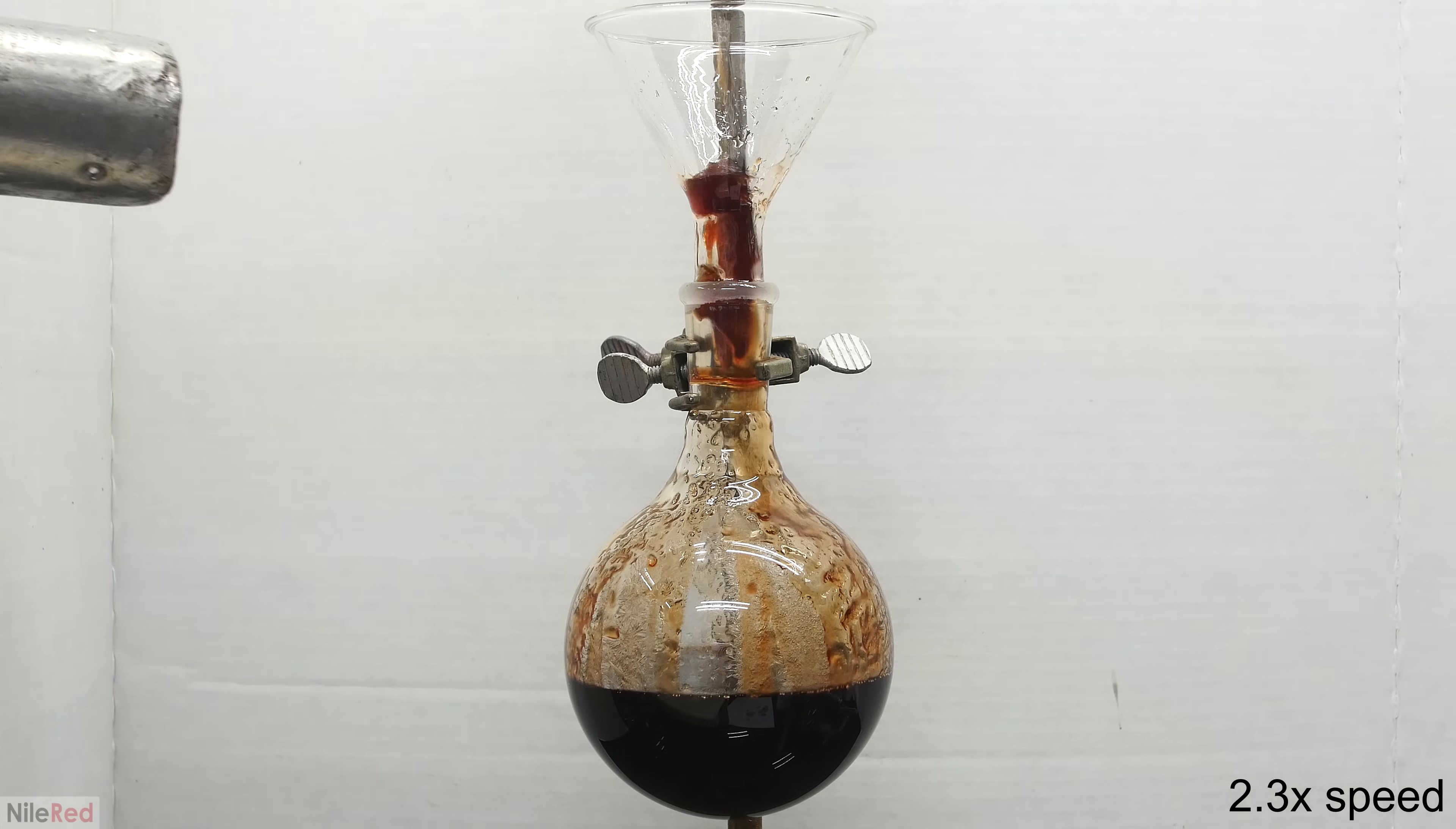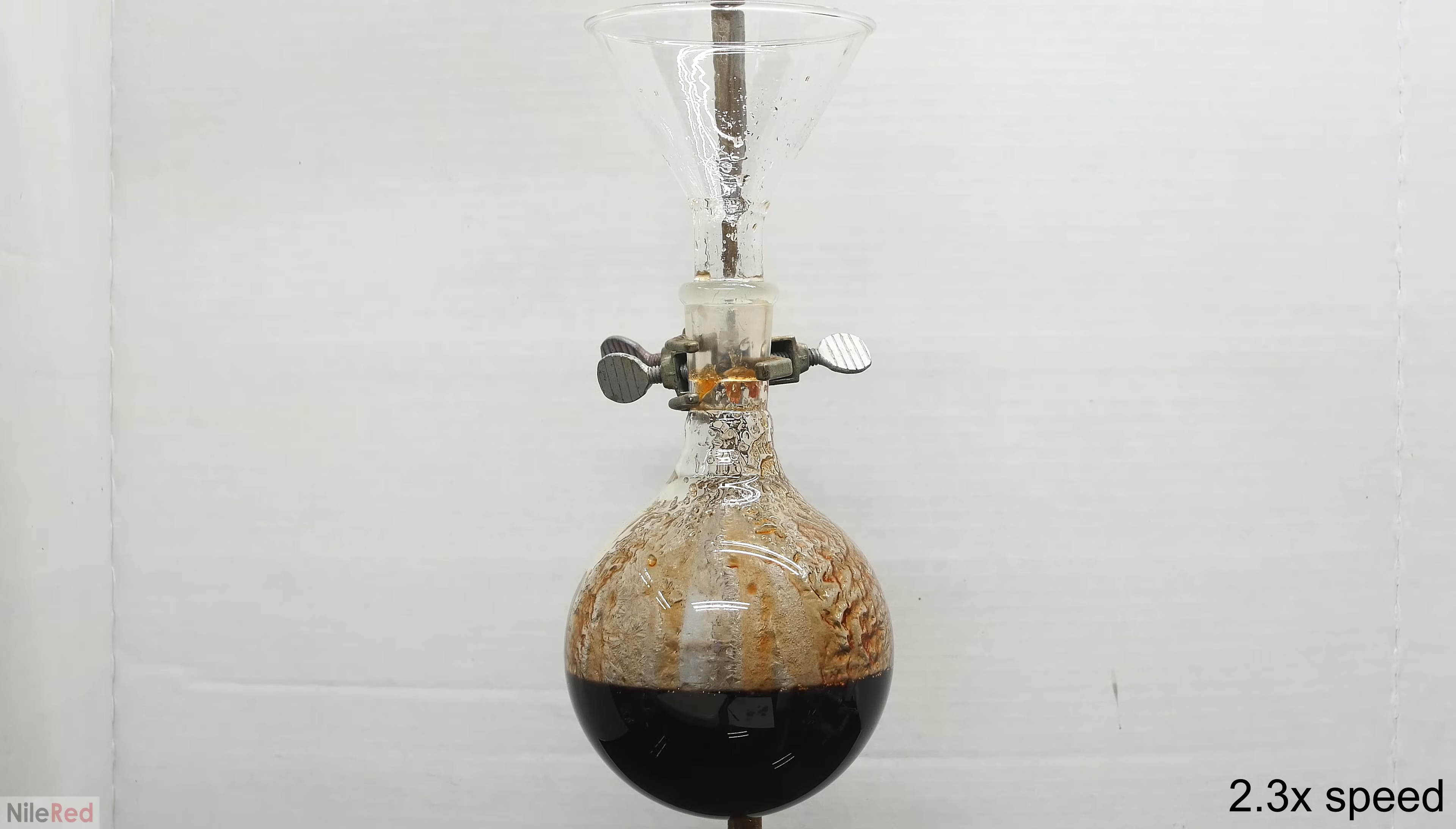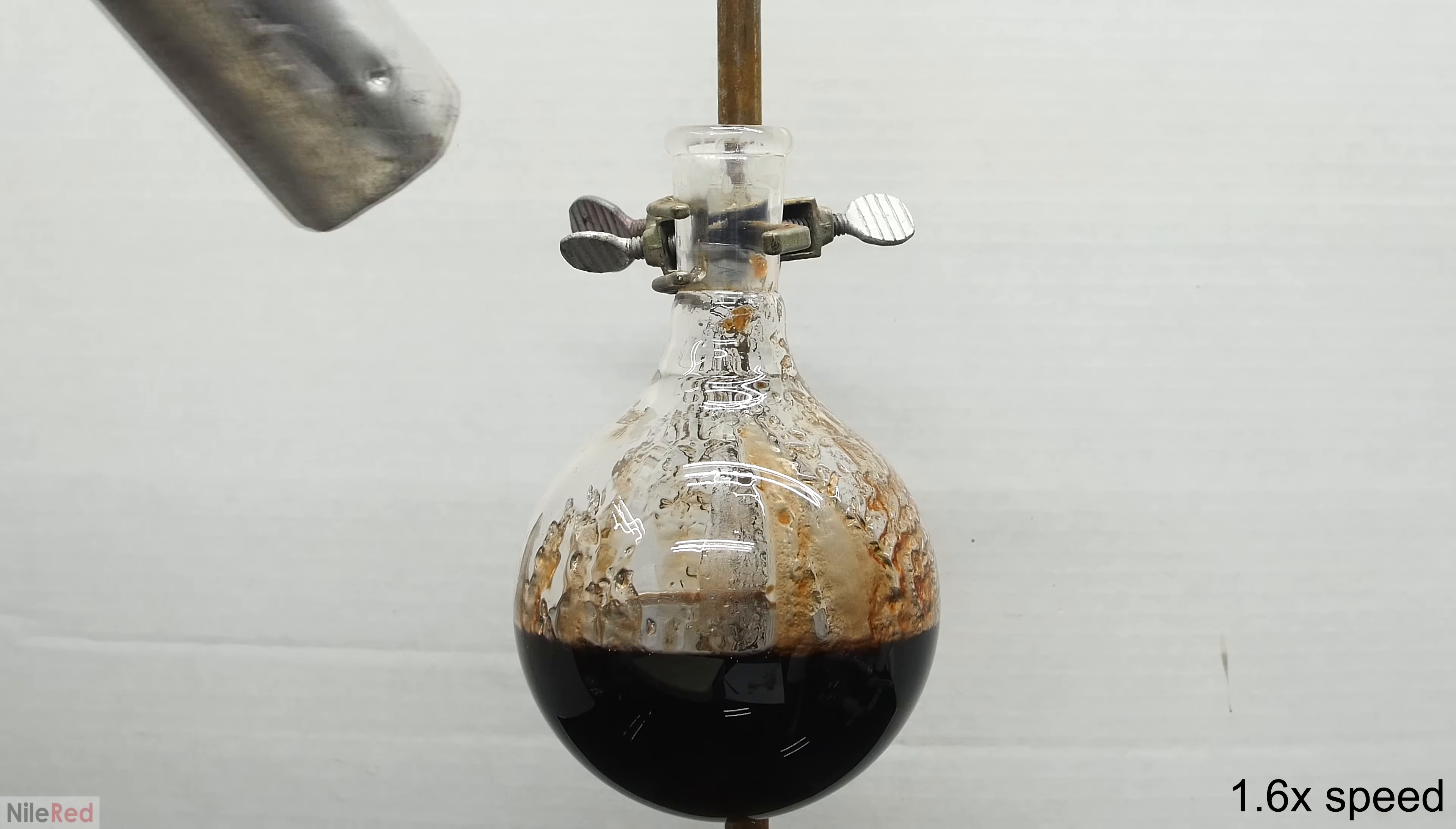Anyway, I was eventually done melting and adding everything, and I was left with a flask of super dirty black liquid phenol. I removed the funnel, and I melted the phenol on the side of the flask, just to try to clean things up a little bit.